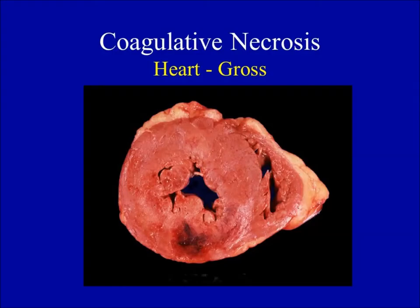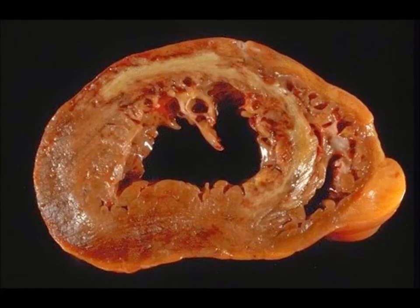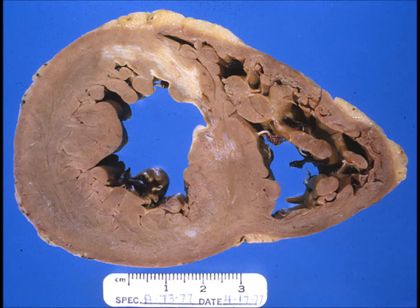There is another specimen showing reddish-brown discoloration, because sometimes there is reperfusion after necrosis which leads to seepage of blood into the dead tissue. There is another specimen showing irregularly placed myocardial necrosis involving almost half of the left ventricular wall. These appearances differ because the infarcts are of different duration. When there is organization and resolution, it leads to fibrosis and appears white.